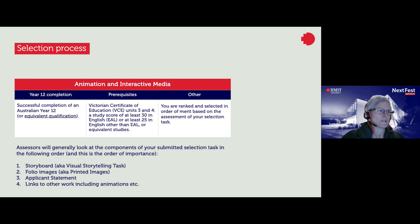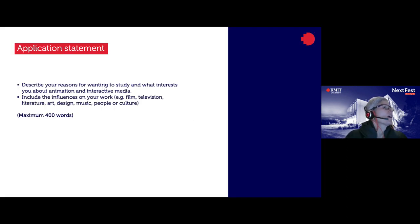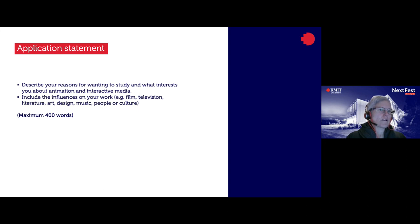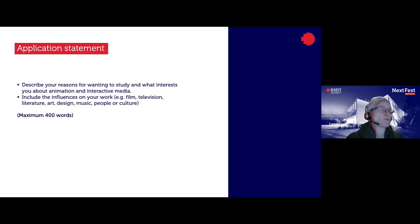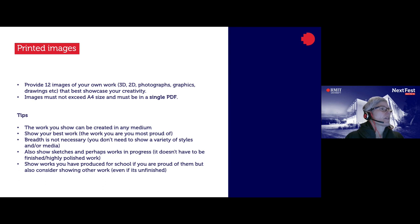I've listed the three items in order of importance. The applicant statement: describe your reasons for wanting to study animation. What interests you about it? The interactive media part of the name is a bit of a red herring — we're more focused on straight animation. Include the influences on your work — tell us what excites you, why you want to do animation, what animations you like, and what you could see yourself making.